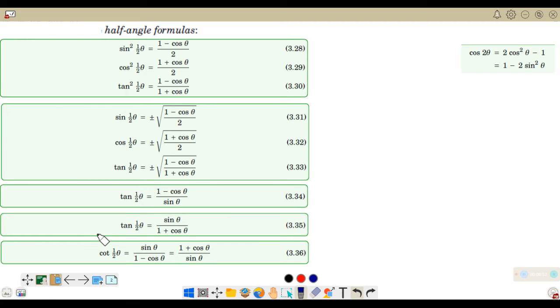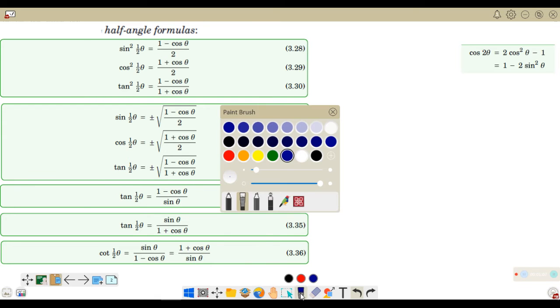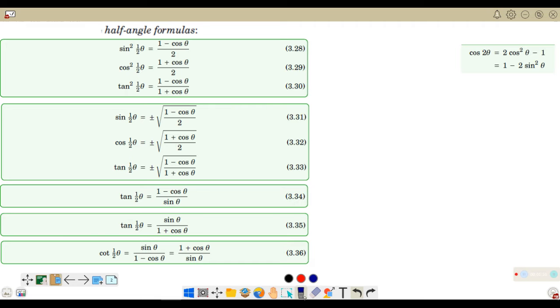So, let us prove how some of the half-angle formulas are derived. We will only focus on sin squared 1 half theta is equal to 1 minus cosine theta over 2.